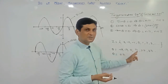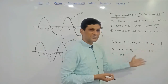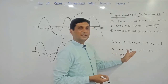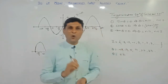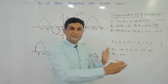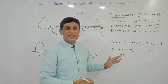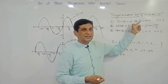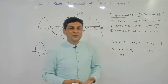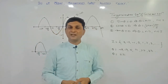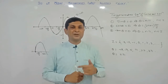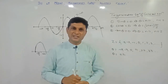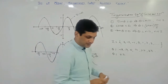For negative values, substituting n = −1 gives −π, n = −2 gives −2π, and so on. This expression θ = nπ represents all solutions of this trigonometric equation, where n takes values from Z, the set of integers. So the first important result is: sin θ = 0 implies θ = nπ. Remember this formula, as we use it while solving examples.